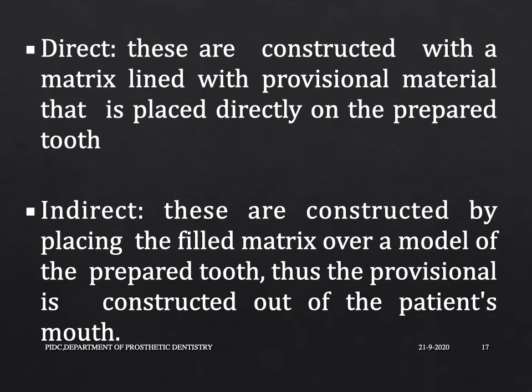Based on the technique of fabrication: in the direct technique, provisional restorations are constructed with a matrix lined with provisional material that is placed directly on the prepared tooth. In the indirect technique, these are constructed by placing a filled matrix over a model of the prepared tooth. Thus the provisional is constructed outside the patient's mouth.